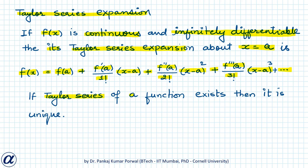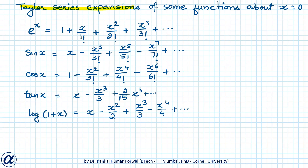There is a theorem that says if the Taylor series of a function about any point exists, then it is unique. It is this property that we will use to find Taylor series expansion without using the direct expression. To apply the shortcut method, we should always use only valid mathematical manipulation. We will remember Taylor series expansions of functions like e^x, sin x, cos x, tan x, log(1+x), etc., about x equals 0.